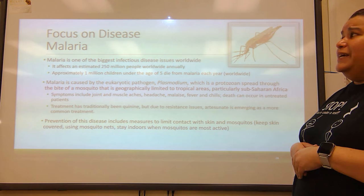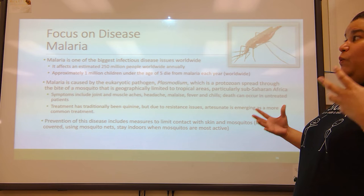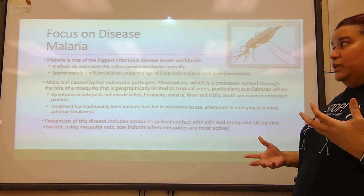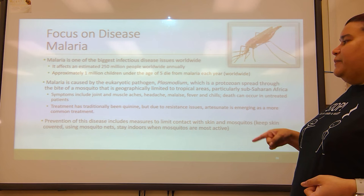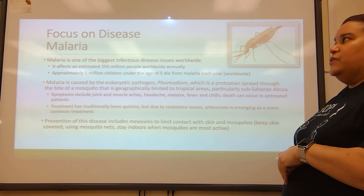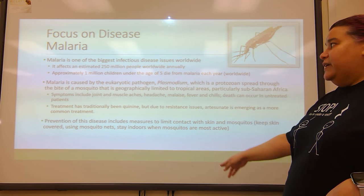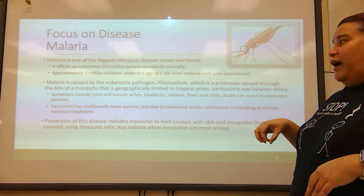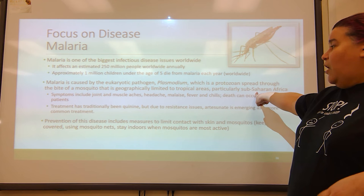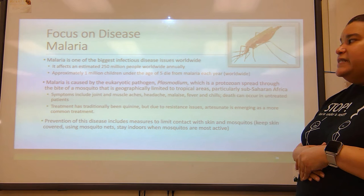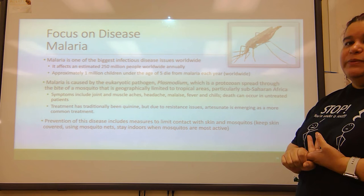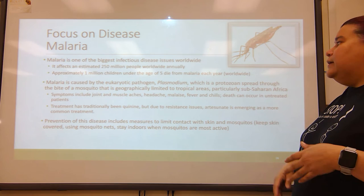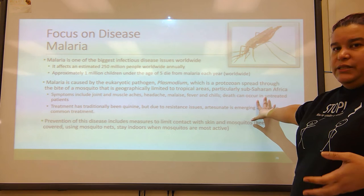Now let's talk malaria. Malaria is one of the biggest infectious disease issues worldwide. It affects an estimated 250 million people worldwide annually. Approximately 1 million children under the age of five die from malaria each year worldwide. Malaria is caused by a eukaryotic pathogen, specifically Plasmodium — it's a protozoan. It's spread through the bite of a mosquito that is geographically limited to tropical areas, particularly sub-Saharan Africa. Symptoms include joint and muscle aches, headaches, malaise — meaning you're super tired and drained of energy — fever and chills. If it goes untreated, it can cause death.